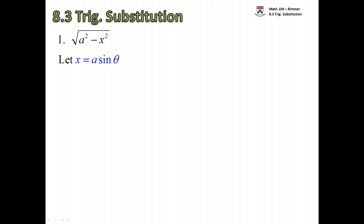Let x equal a sine theta. We need to consider this closely. Assuming that a is some positive number, what does that mean about x? Imagine if x were to be bigger than a — in that case we'd have a negative underneath the square root, or smaller than negative a. So what we need to be sure of is that x is somewhere between minus a and a.